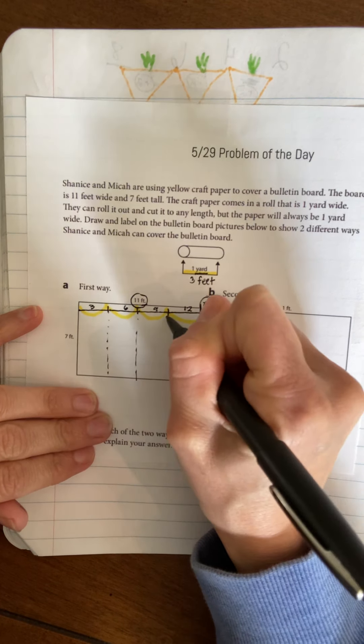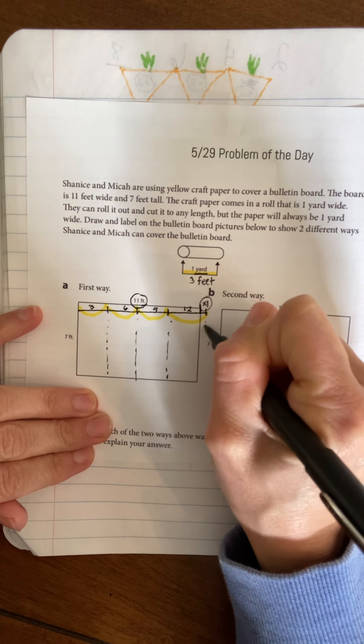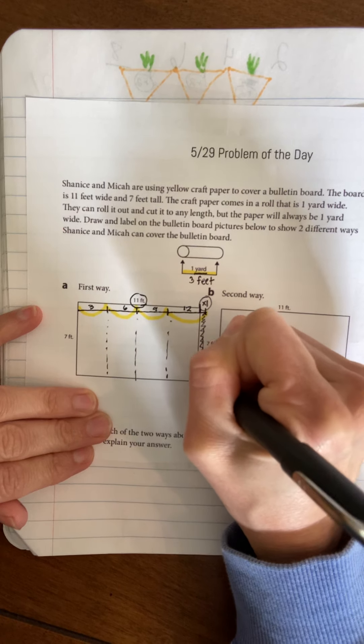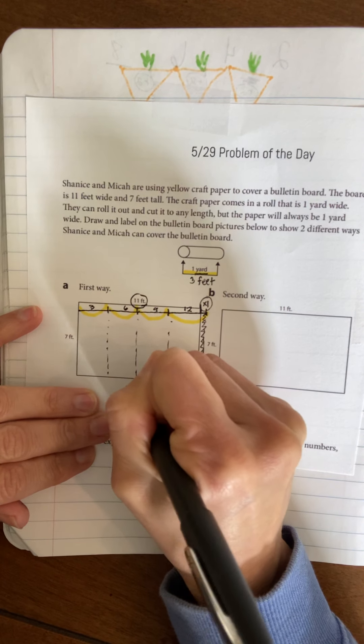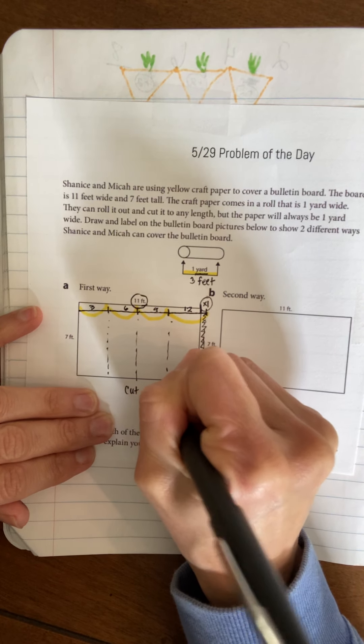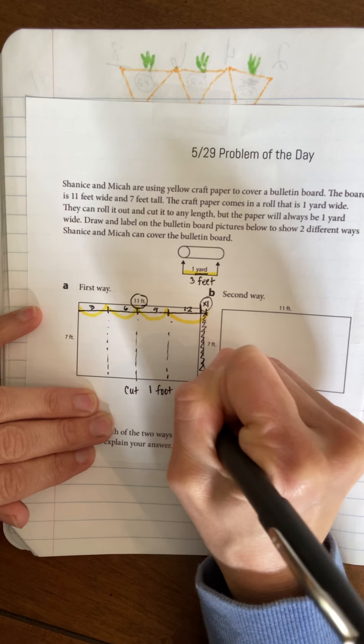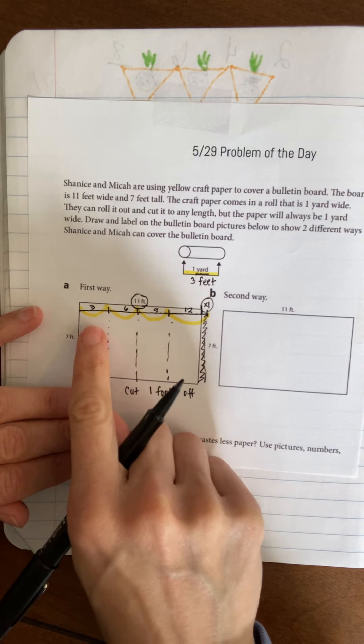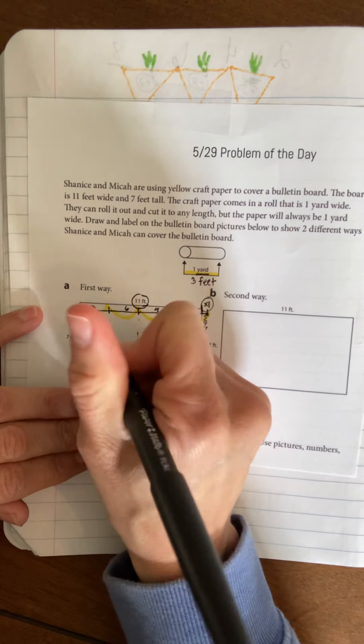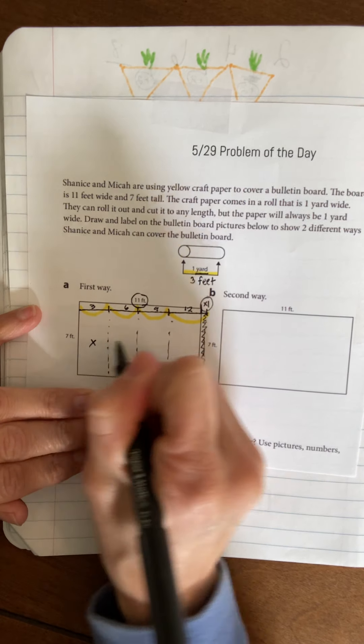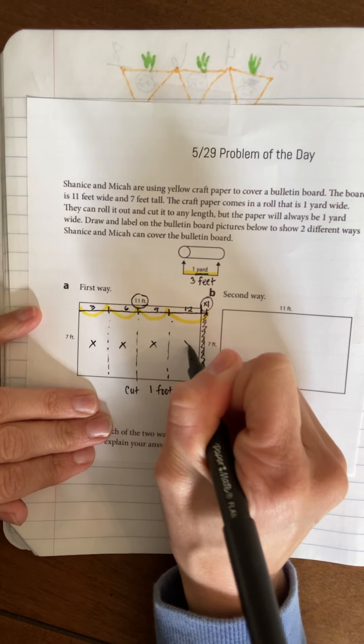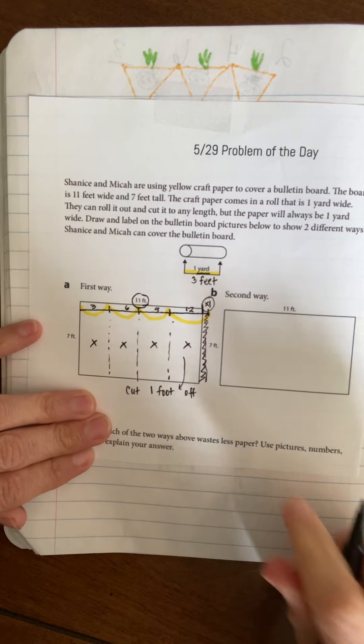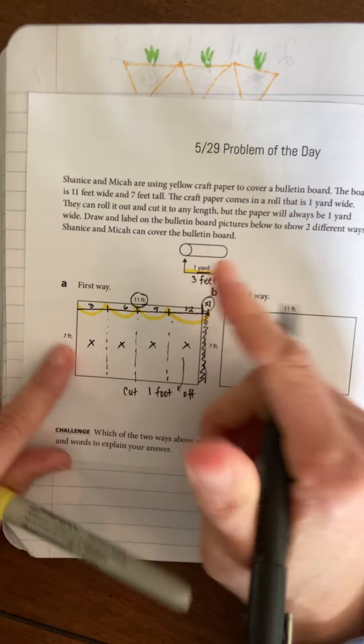One foot off right here at the end. They can roll it as far down as they want to cut, so no problem. What they would have to do is roll it out one, two, three, four times and cut one foot off.